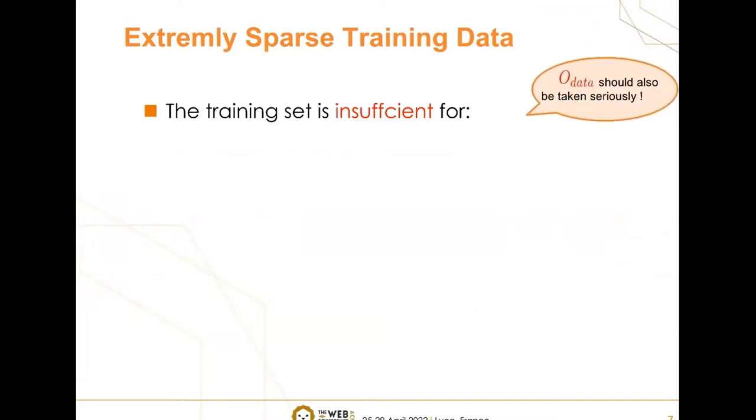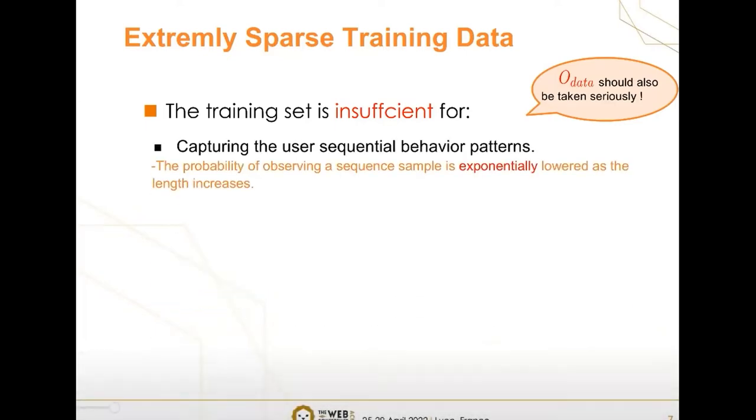In real-world recommendation scenarios, there can be millions of products in the system, but each user may only interact with very few of them, which makes the recommendation datasets extremely sparse. And the situation can be even worse if one wants to capture the user sequential behavior patterns.